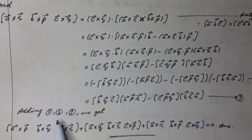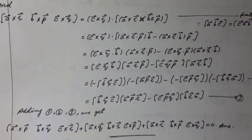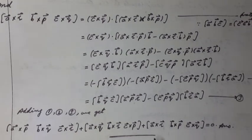Adding equations 1, 2 and 3, we get: (A vector cross P vector, B vector cross Q vector, C vector cross R vector box) plus (A vector cross Q vector, B vector cross R vector, C vector cross P vector box) plus (A vector cross R vector, B vector cross P vector, C vector cross Q vector box) equals zero scalar. Answer.